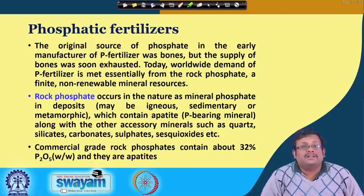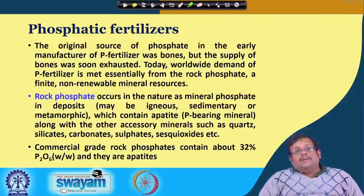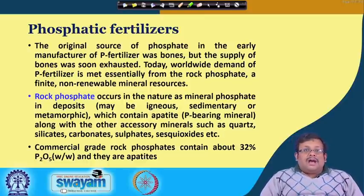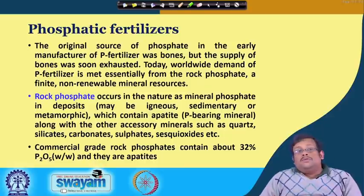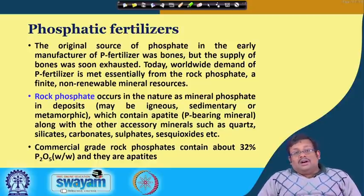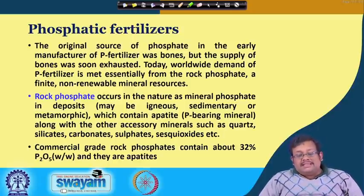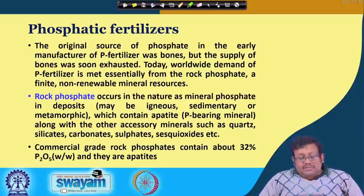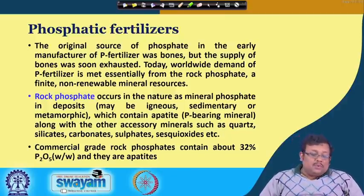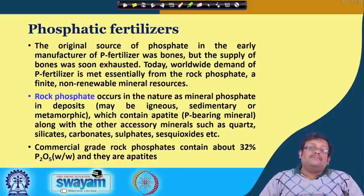The original source of phosphatic fertilizer was animal bones, which contain high amounts of phosphate. Due to worldwide demand, phosphatic fertilizers are now produced from rock phosphate. Rock phosphate occurs as mineral phosphate in igneous, sedimentary, or metamorphic deposits containing apatite — the phosphate-bearing mineral — along with accessory minerals such as quartz, silicates, carbonate, sulphates, and iron oxides. Commercial grade rock phosphate contains 32% P2O5.